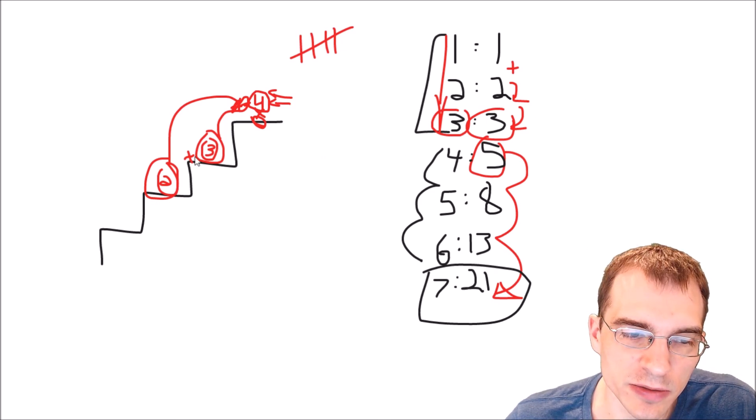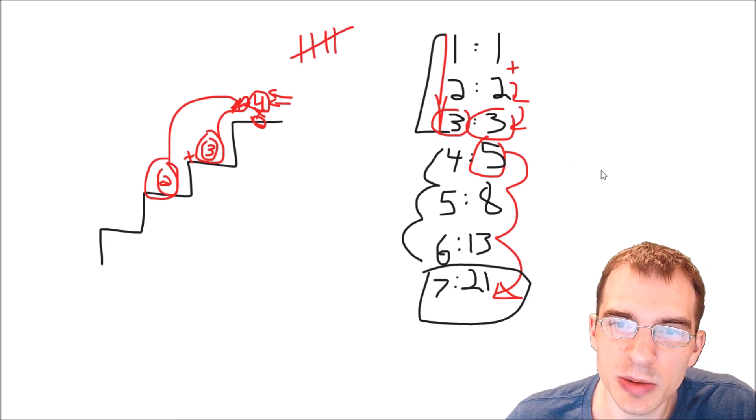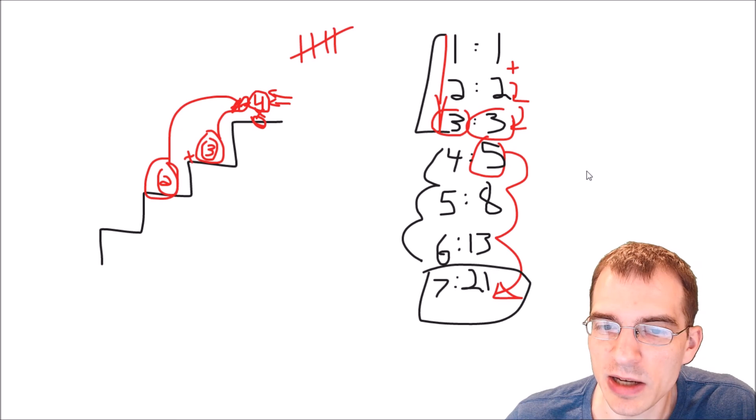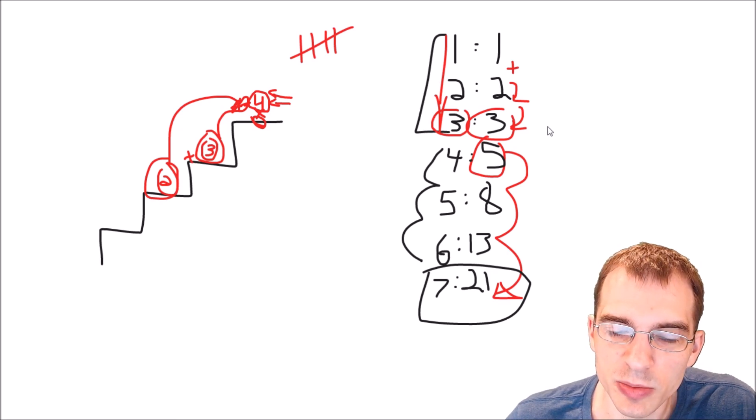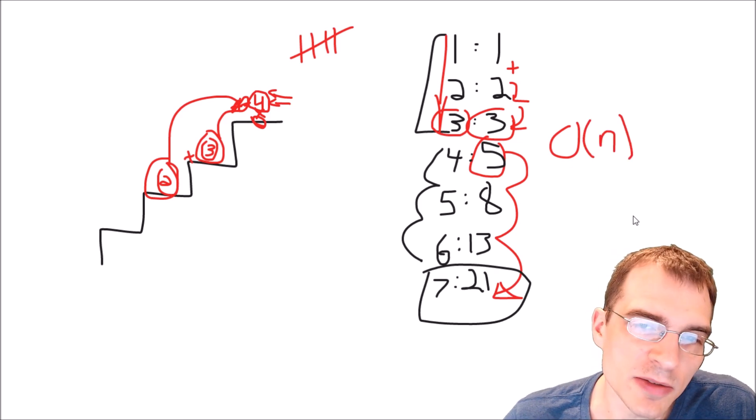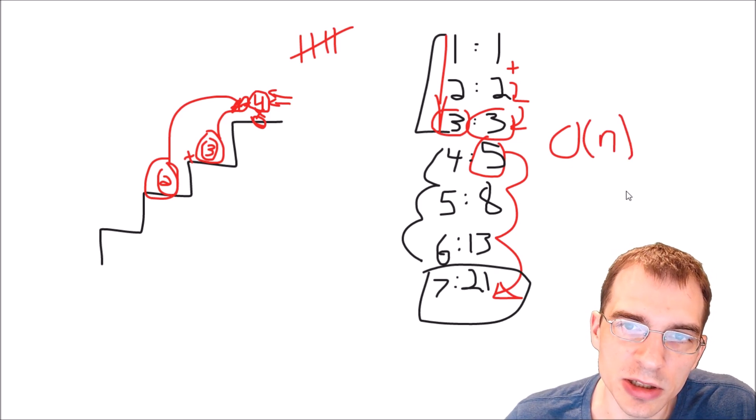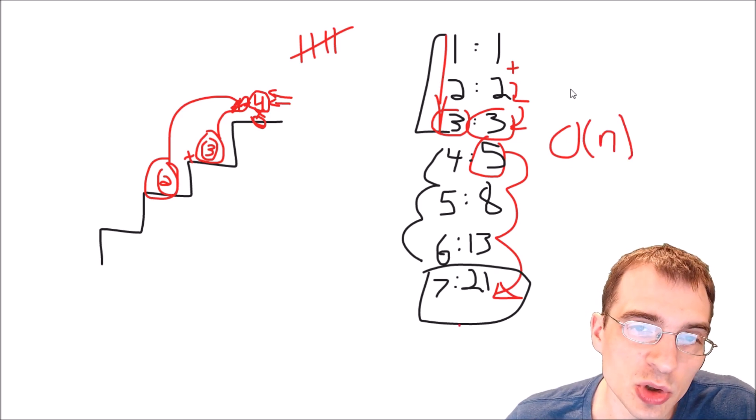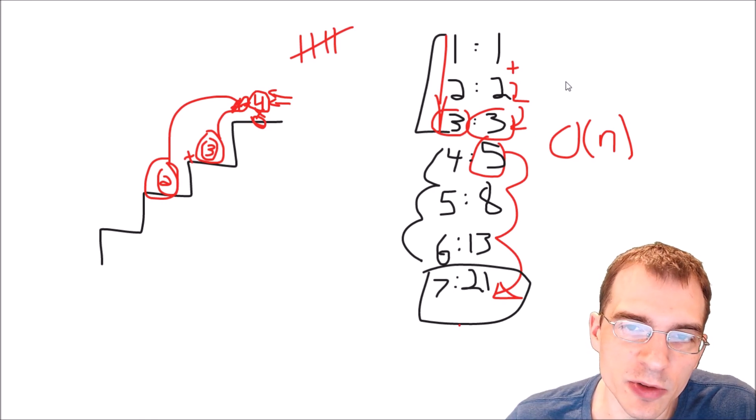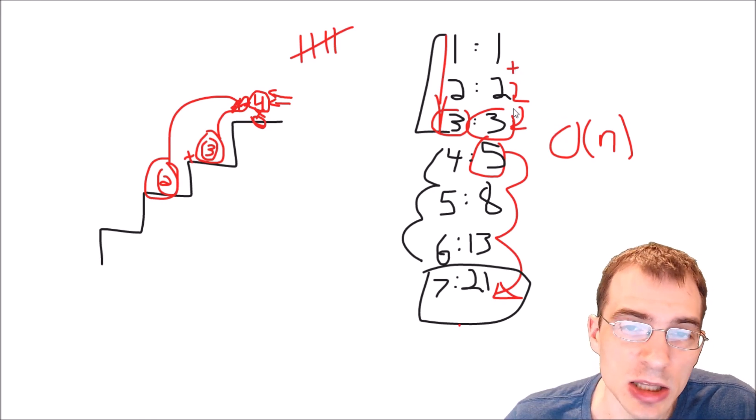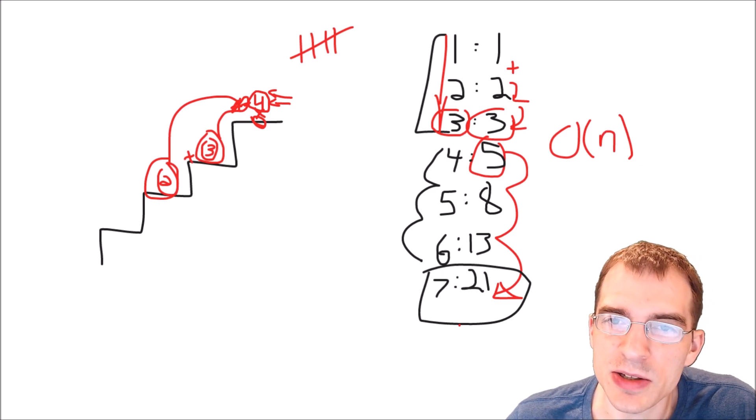So if you knew something like that you might be able to even code up a solution that was faster computationally than this one because our solution was an O of n solution which means the amount of time it takes to run scales up linearly with the input size. But if you knew the underlying math and formulas for the Fibonacci sequence you might even be able to come up with something that is faster than linear.